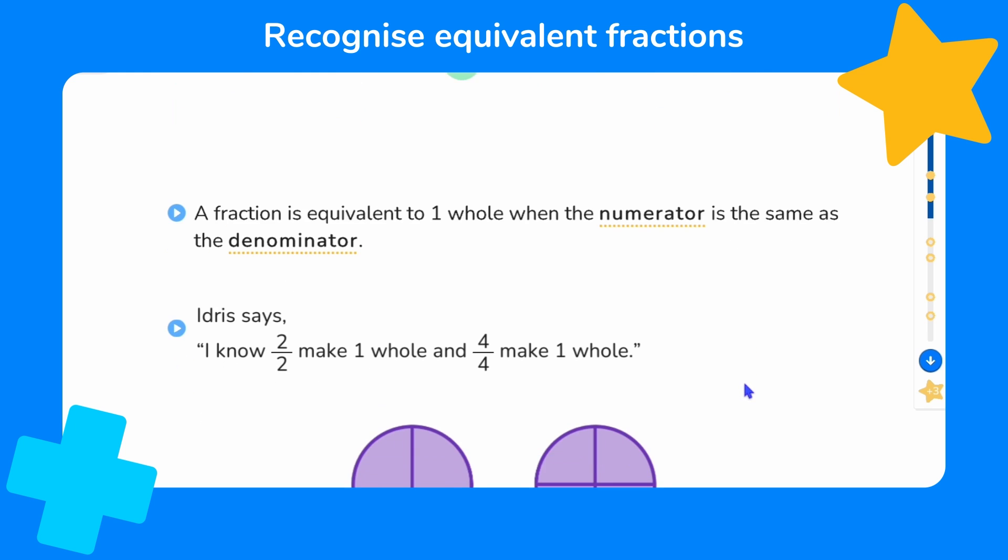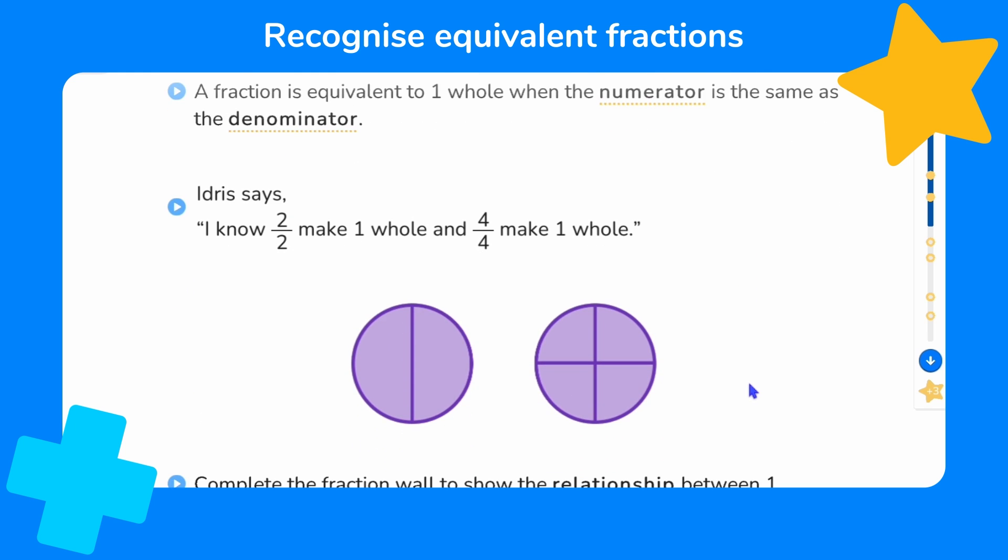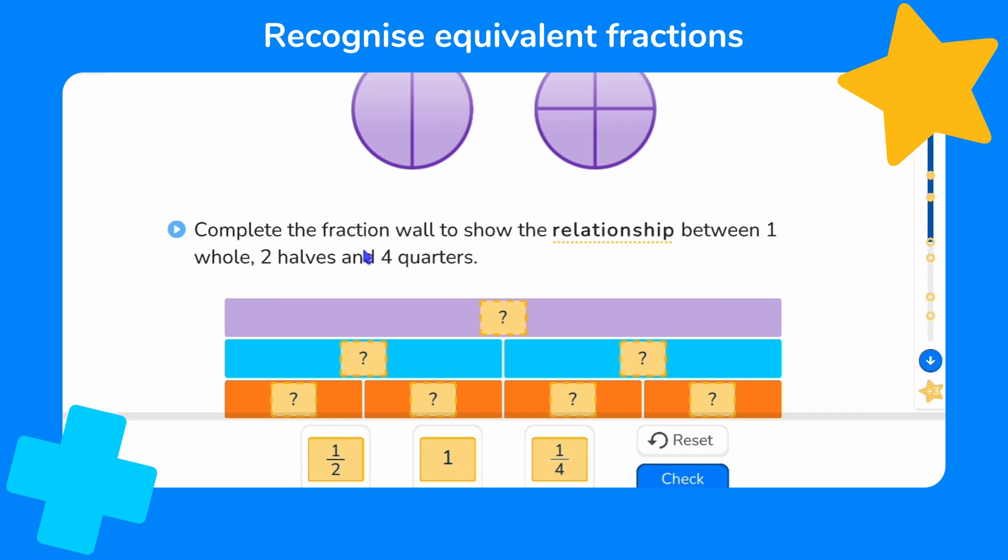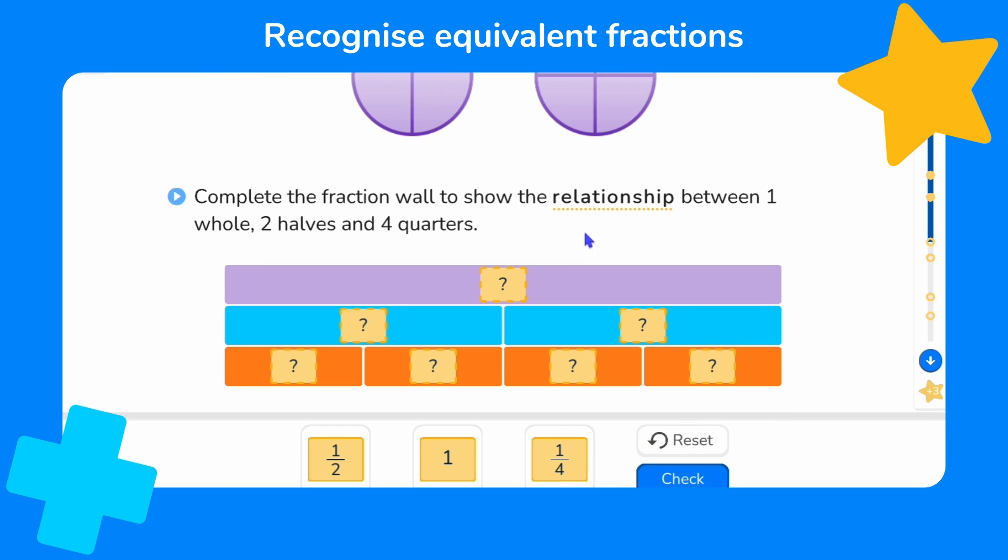Well let's look at these shapes. Both show the whole amount shaded. This one has two halves shaded, two out of two. And this one has four quarters shaded, four out of four. Now this could help us because we're now asked to complete a fraction wall which shows a whole bar but split into two equal parts and four equal parts. And we've got some labels here.